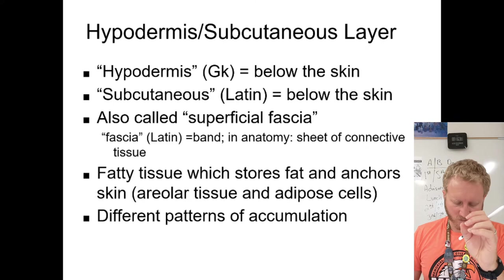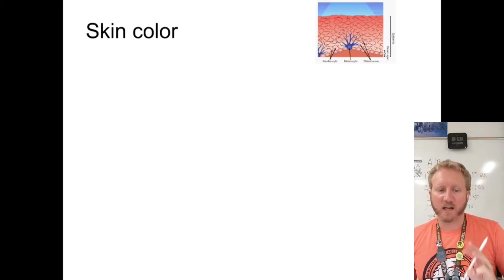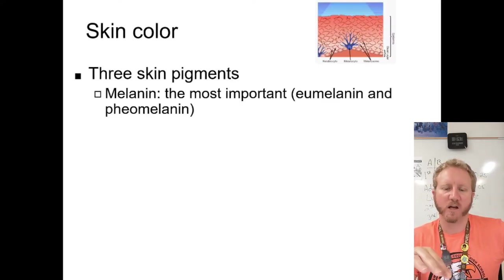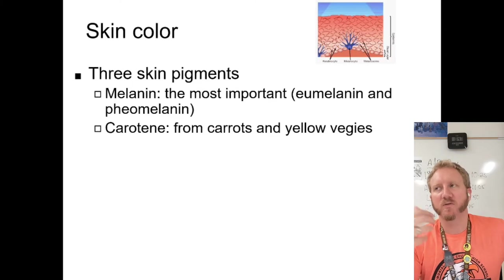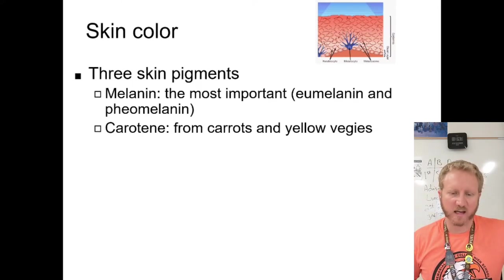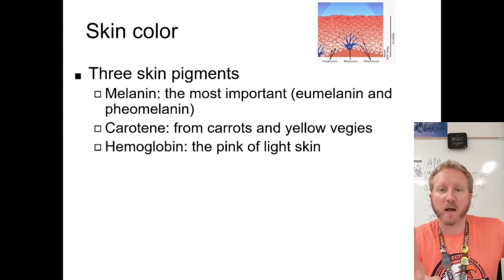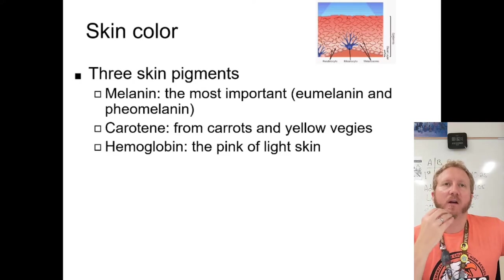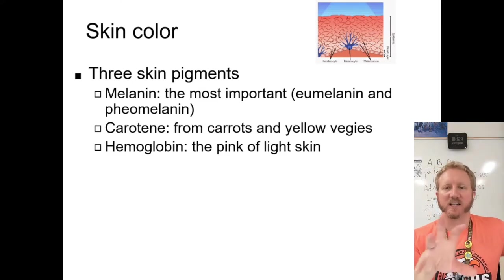Regarding skin color, there are three skin pigments. Melanin is the most important, with two subclasses: eumelanin, which gives browns, and pheomelanin, which gives reds. Carotene gives oranges and yellows — you get it from red and orange vegetables like carrots and yellow bell peppers. Hemoglobin gives skin its pink color.